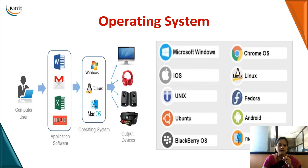Just as an example: you are the user using any of these application softwares, you operate them using the operating system, and finally work with your input or output devices. When you want application software to be installed on your system, it is compulsory that you need to have the operating system installed first. Some examples of operating systems are Windows, iOS, Android, Fedora, and Linux. Most of our mobiles are operating on the Android operating system.